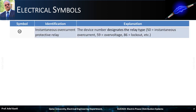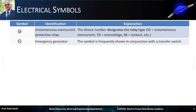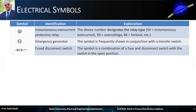The first symbol represents a protective relay. The device number designates the relay type: 50 is used for instantaneous over current, 59 is used for over voltage, 86 is used for lockout, etc. The next symbol represents an emergency generator, frequently shown in conjunction with a transfer switch. The next symbol represents a fuse disconnect switch, which is a combination of a fuse and disconnect switch with the switch in the open position.